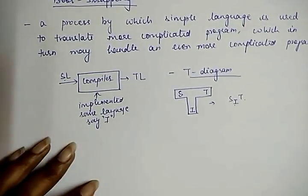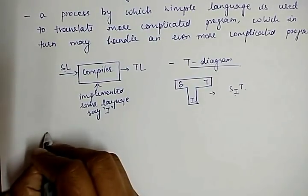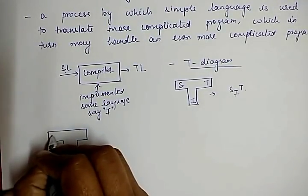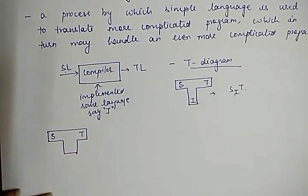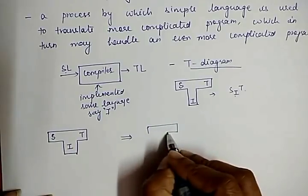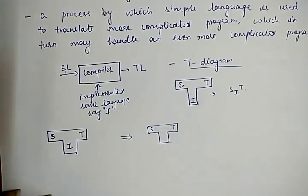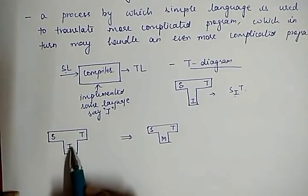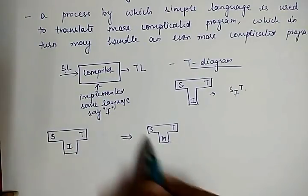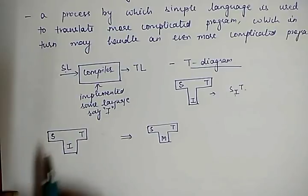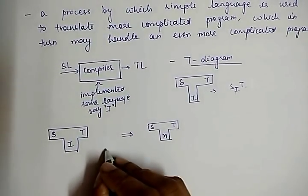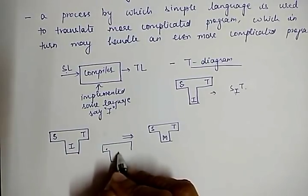Now, how does bootstrapping work? Suppose there is a compiler with source language S, target language T, and the compiler is written in some language I. I want to convert the compiler written in language I into a compiler written in machine language. This process of conversion is known as bootstrapping.